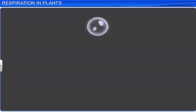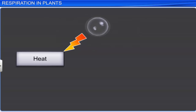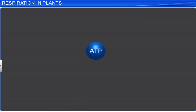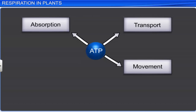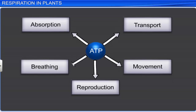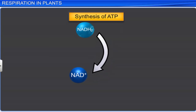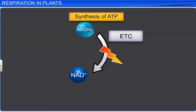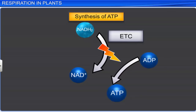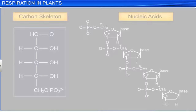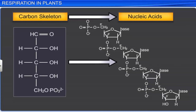While a small part of the energy is released as heat, most of it is used for synthesizing adenosine triphosphate or ATP, a high energy molecule. ATP is utilized for carrying out all the activities such as absorption, transport, movement, reproduction, and breathing. Compounds like NADH formed during the oxidation of respiratory substrates are utilized in the ETC to derive energy in the form of ATP. The carbon skeleton obtained during respiration is used in the synthesis of other biomolecules like nucleic acids.